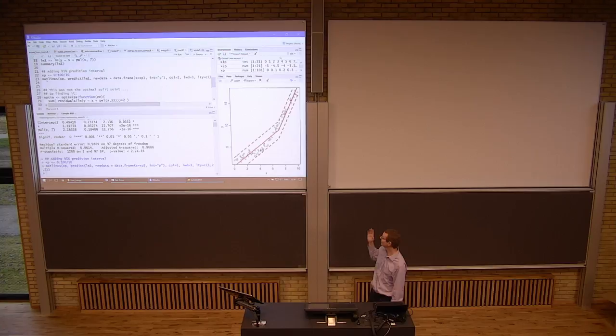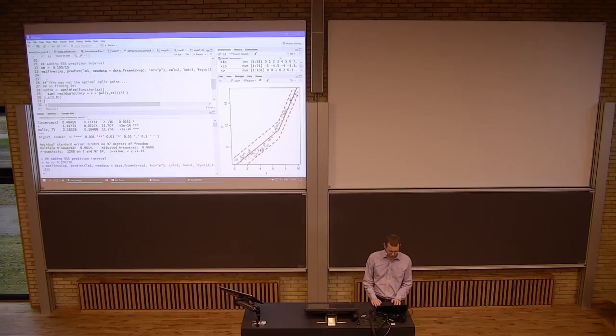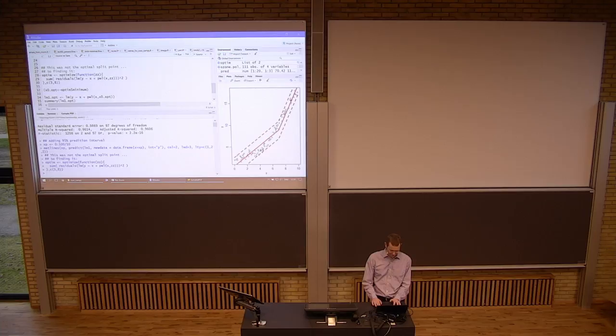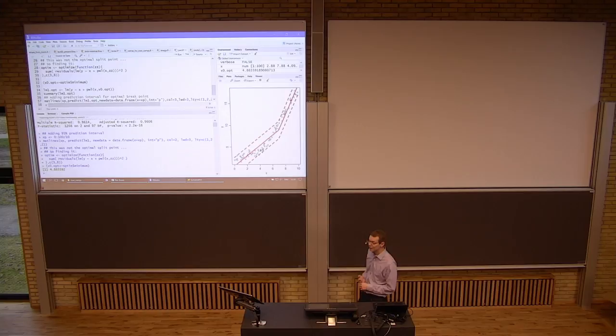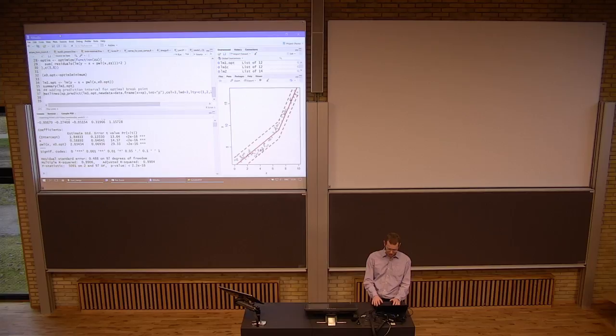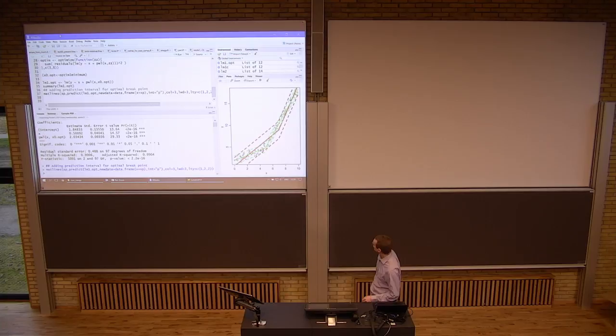Rather than having to code the cut point every time, I made a small function called PVL, and I can use that in my regression with any breakpoint. It tells me which variable I want to have a piecewise part for, and then I just fit the model. I'll make some prediction data and it looks like this. I did not use the optimal break point — I used 7 as a break point — and therefore the uncertainty looks much larger than it's supposed to be. It's not a good model. So what you'll typically want to do is to optimize this using the optimize function.